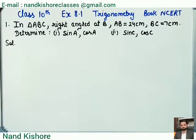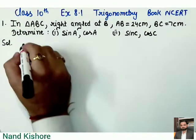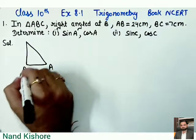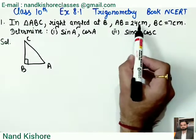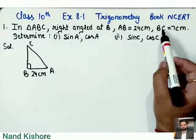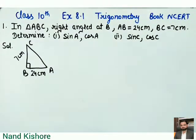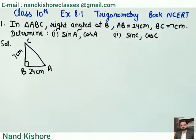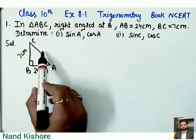Look at question number one on the board. In triangle ABC, right angle at B. So first of all we are having a triangle ABC — let me draw it. We are given AB is equal to 24 centimeters, BC is 7 centimeters. We need to find sine A, cos A, sine C, and cos C — two parts. But first, base and perpendicular are there, so I'll find the hypotenuse.